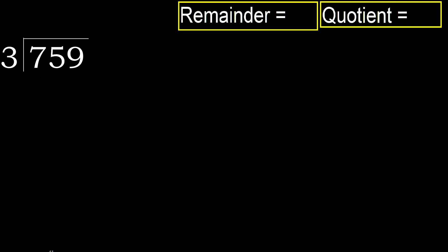759 divided by 3. 7 is not less, therefore start with 7. 3 multiplied by which number is nearest to 7 but not greater? 3 multiplied by 3 is 9, which is greater. Multiply by 2: 3 multiplied by 2 is 6, which is not greater. Subtract.